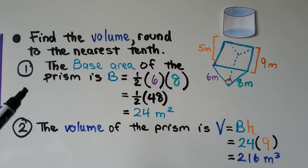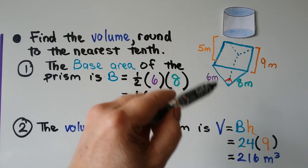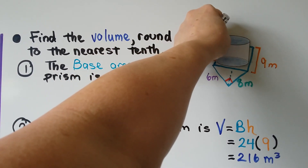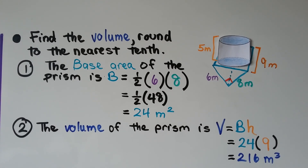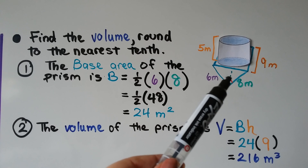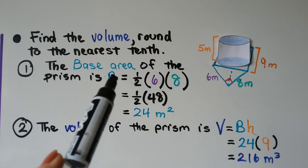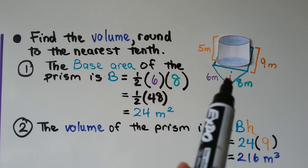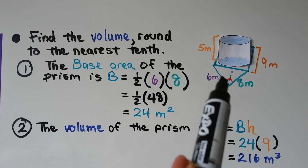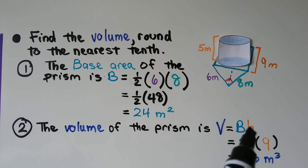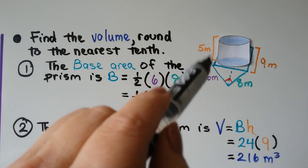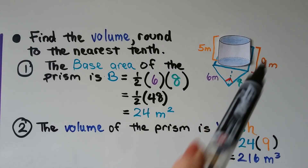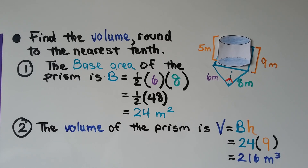We need to find the volume and round to the nearest tenth. We have a triangular prism with a cylinder sitting on it, making a composite figure. The base area of the triangular prism is half times 6 times 8, which equals 24 meters squared. The volume of the prism is base times height: 24 times 9 equals 216 meters cubed. The height of 5 meters belongs to the cylinder.